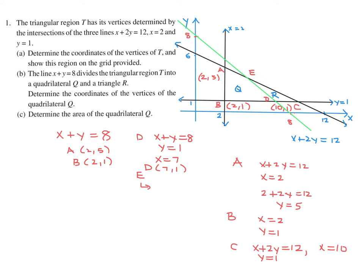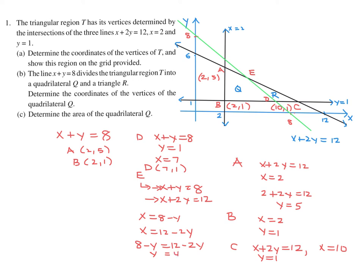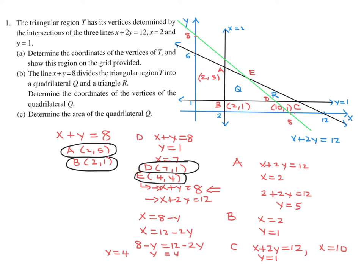Point E is the intersection of x plus y equals 8 and x plus 2y equals 12. Isolating x in each: x equals 8 minus y and x equals 12 minus 2y. Setting equal gives y equals 4, and substituting back gives x equals 4. So E is (4, 4). The four vertices of quadrilateral Q are A(2,5), B(2,1), D(7,1), and E(4,4).